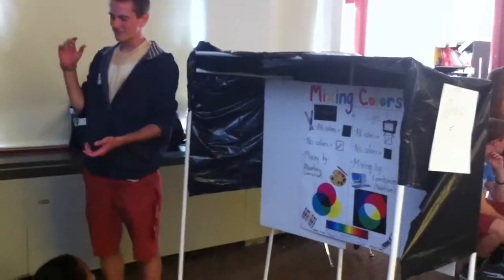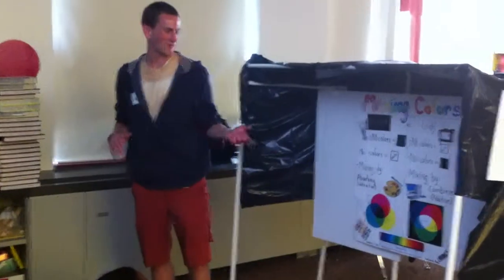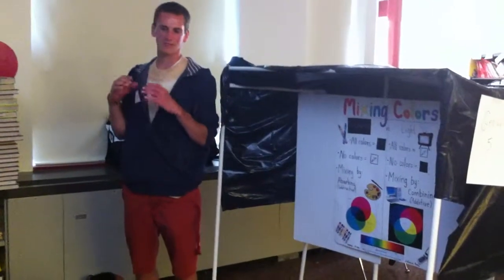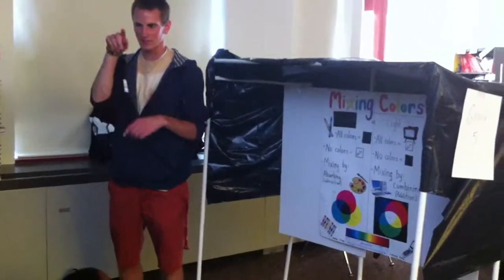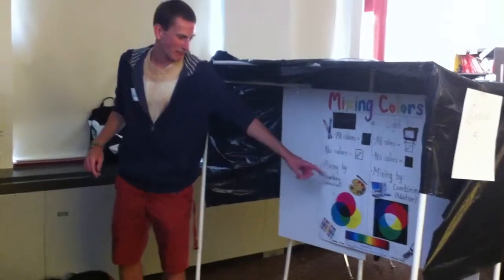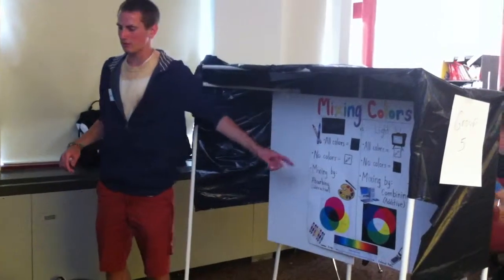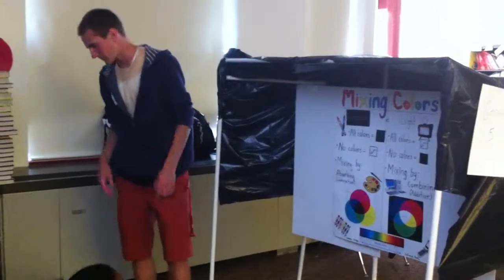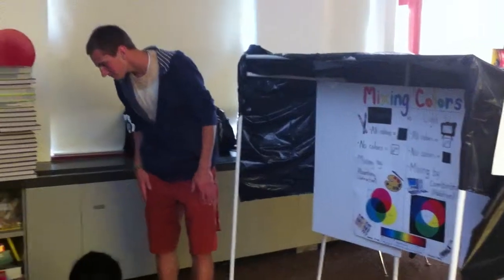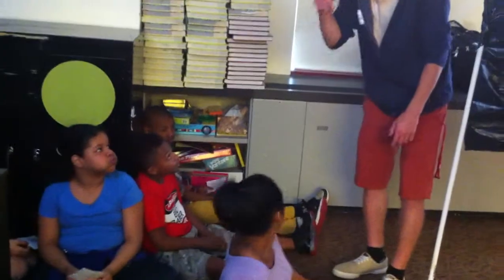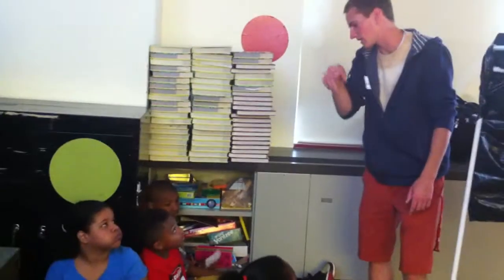In your TV, your cell phones, your computer — whatever — these little things are little pixels. These little, tiny squares. And they have red, they have blue, and they have green. It's all in little pixels on the screen.